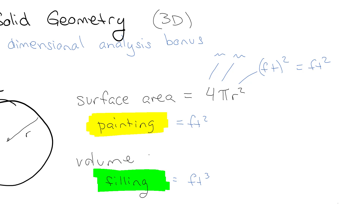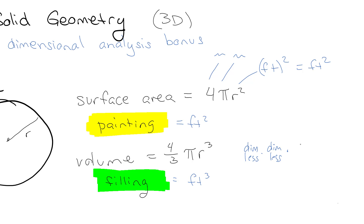For the volume, it's four-thirds πr³. Four-thirds is dimensionless, π is dimensionless, and then r³ is in feet but it's cubed. So we have cubic feet. The dimensions work out.